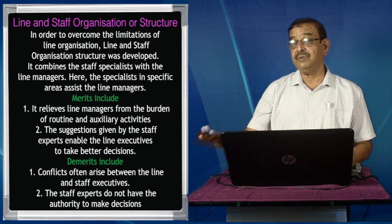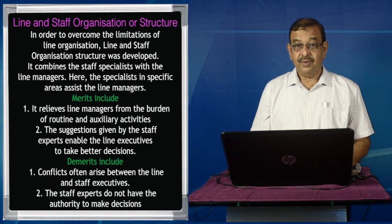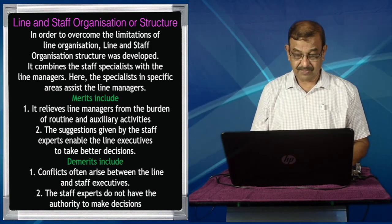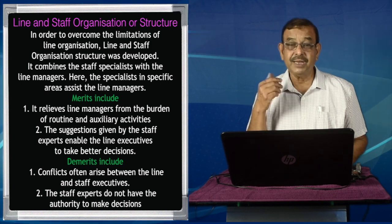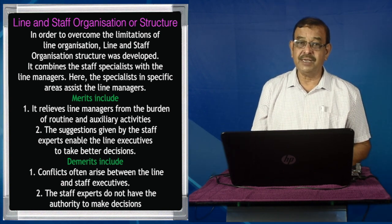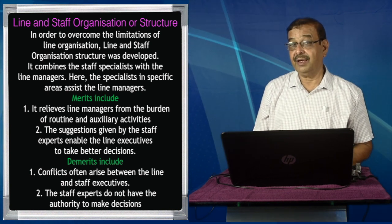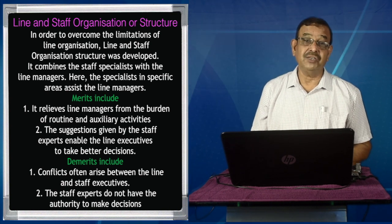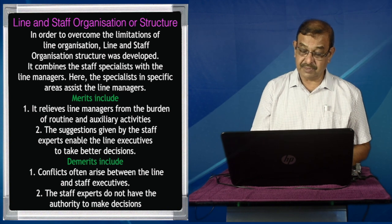What are the merits? It relieves the line managers from the burden of routine and auxiliary activities, so you do not have to always review rules, acts, and manuals — the legal expert will help you, and you can concentrate on production. The suggestions given by staff experts enable line executives to take better decisions. However, there could be some demerits. There could be conflicts — the legal expert might say one thing and the production expert might say another, and reconciling differences of opinion becomes a problem. Achieving cohesion is also a problem. The staff experts do not have the authority to make decisions; ultimately, decisions have to be made by administration. Staff specialists might have one perspective while administration might take another.